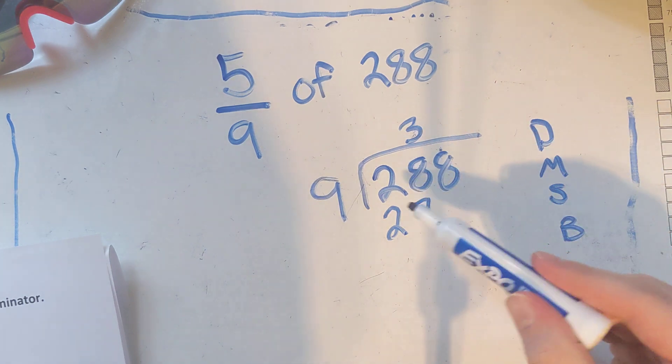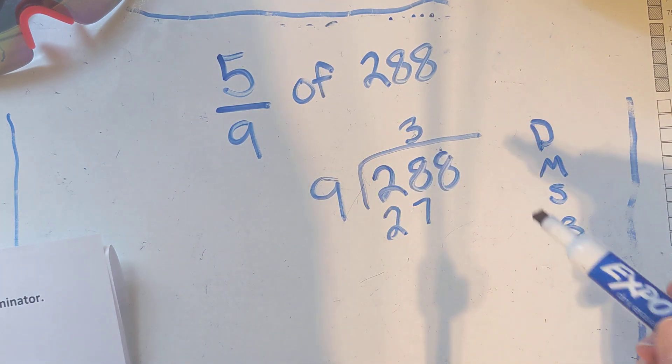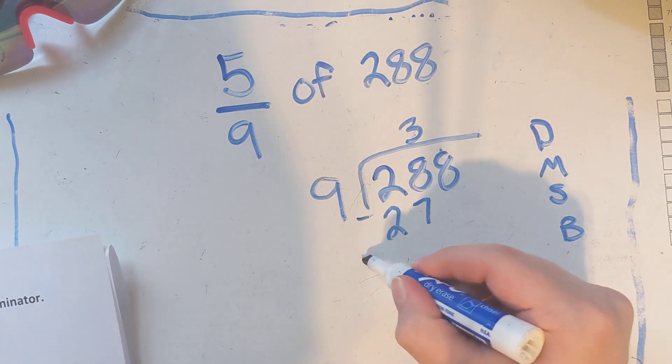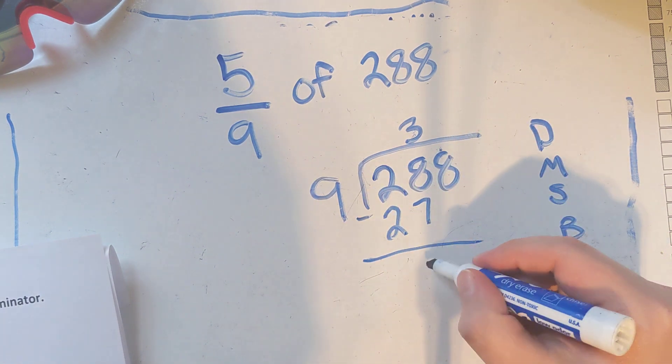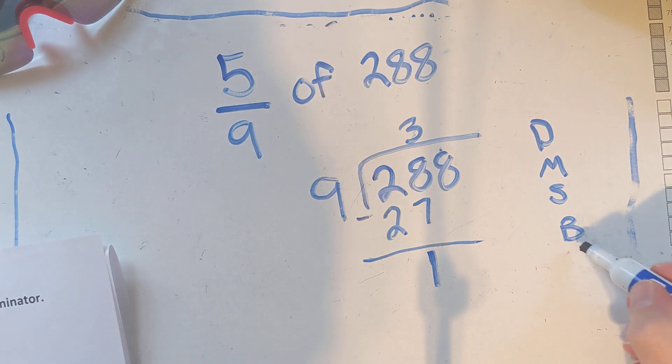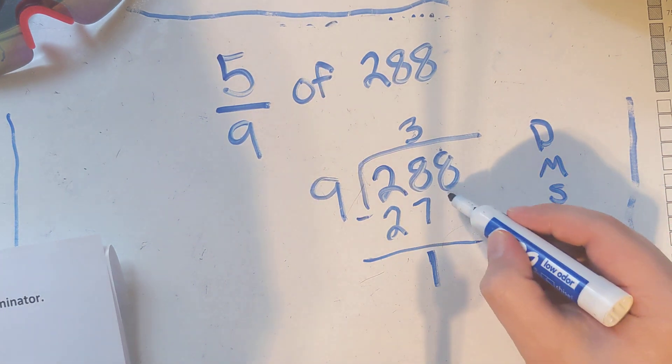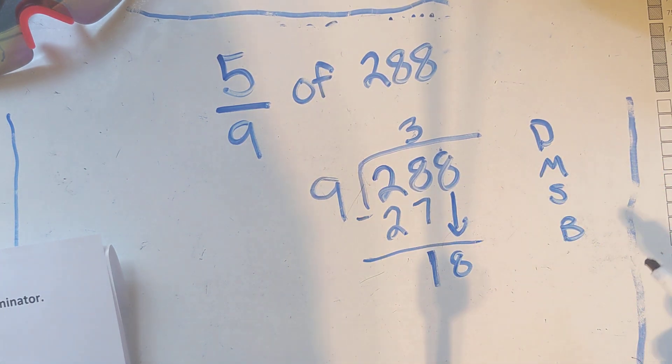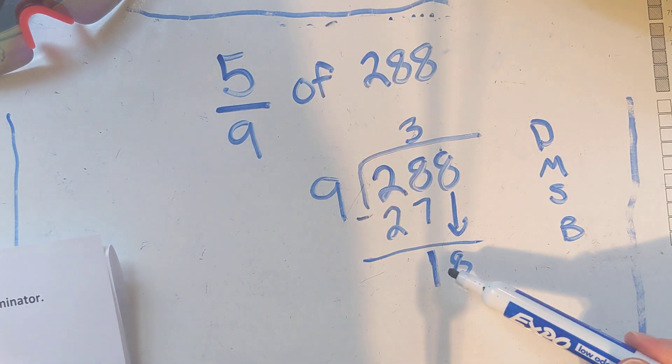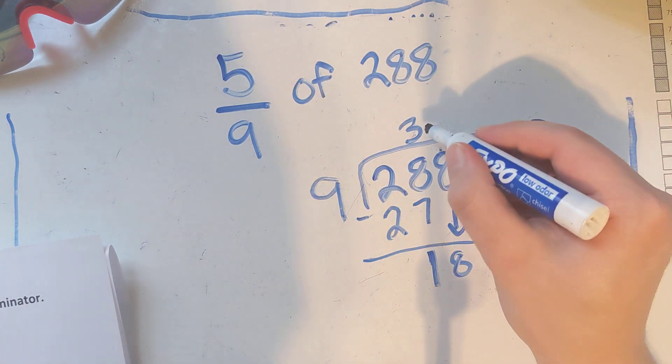That's where I get my 9 times 3 is 27. Multiply. Now I'm going to subtract: 8 minus 7 is 1. Then B stands for bring down, so I'm going to bring down my 8.